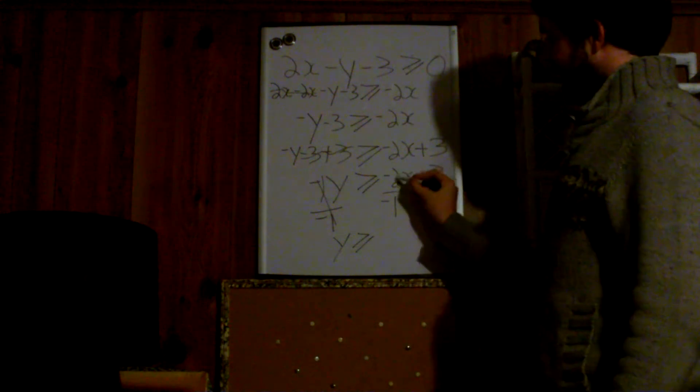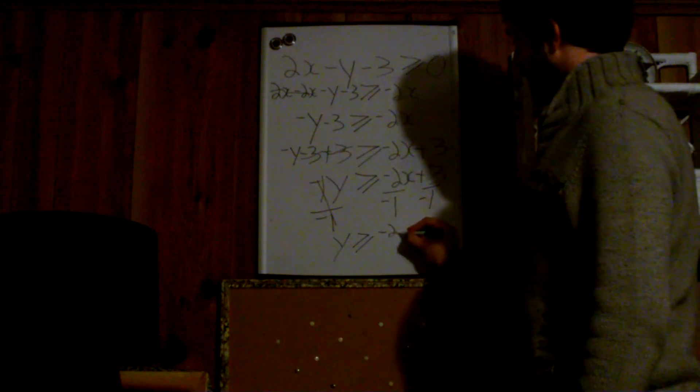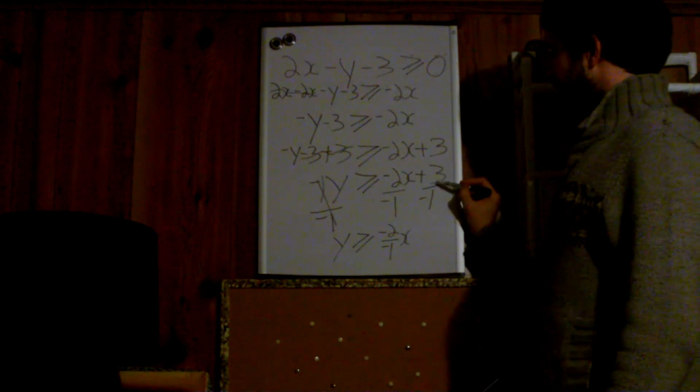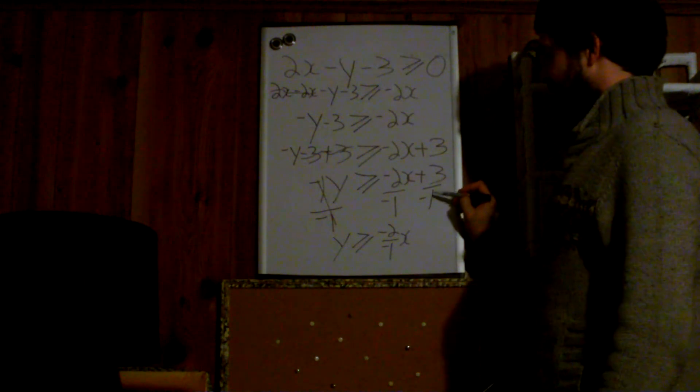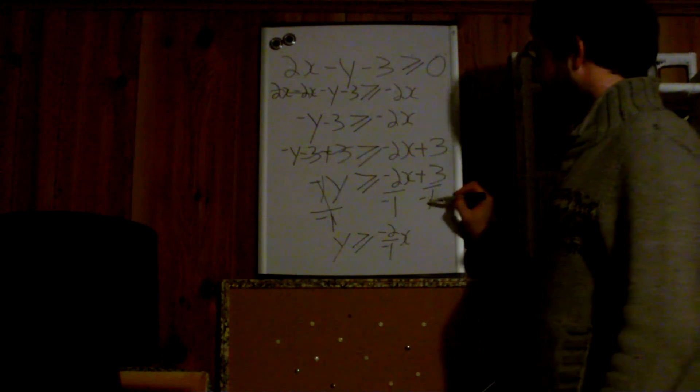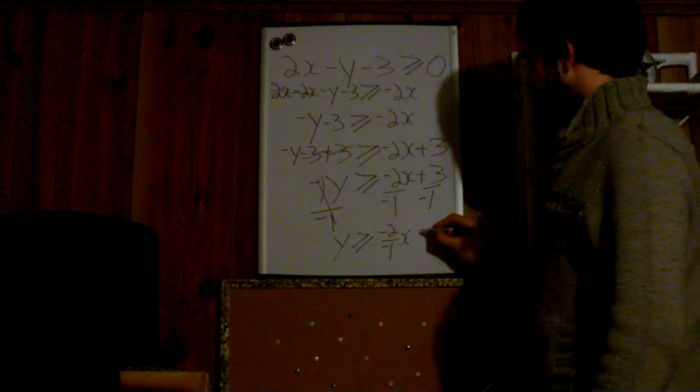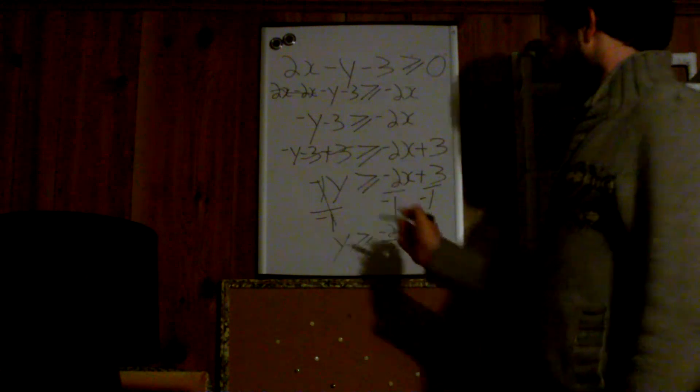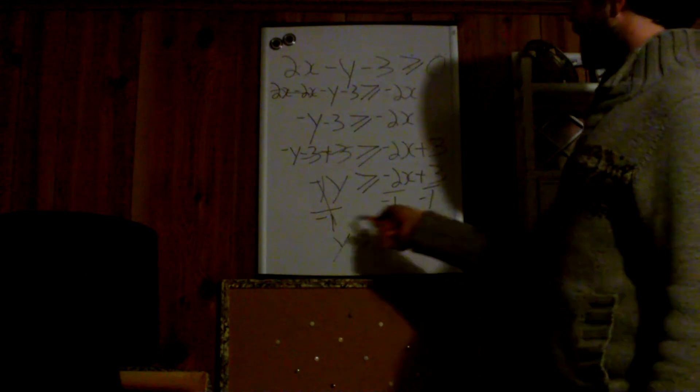And negative 2 over negative 1 x, and 3 divided by negative 1. Well, the positive divided by a negative gives you a negative, and how many times does 1 go into 3? 3 times. So there's our final equation for our inequality.